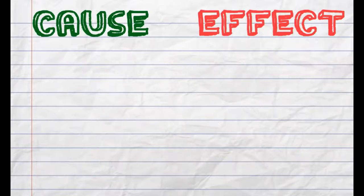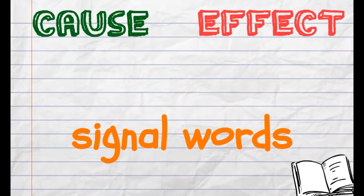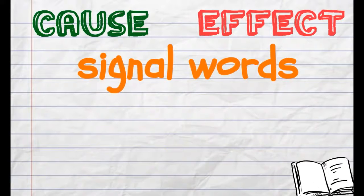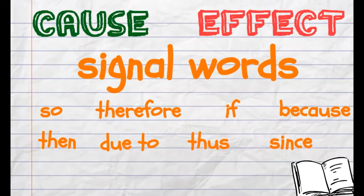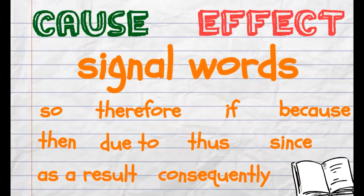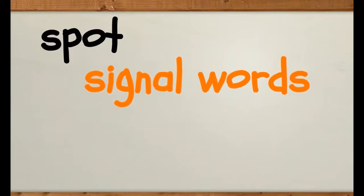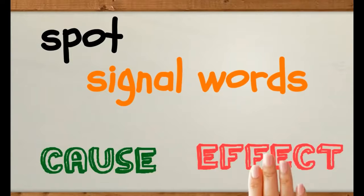An easy way to spot cause and effect relationships in books is to look out for signal words. Cause and effect signal words tell the reader that there might be cause and effect occurring. Here are some cause and effect signal words and phrases you might come across. See if you can spot signal words in a text and then work out which is the cause and which is the effect.